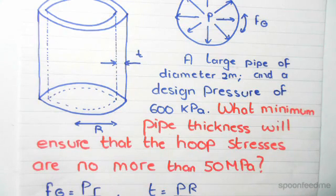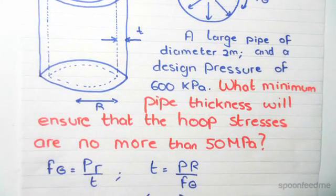So we need to find the thickness that ensures we don't exceed 50 megapascals worth of hoop stresses. As we've seen this equation before, F theta, which is known as hoop stress, equals PR divided by thickness, where P is the pressure, R is the radius, and T is the thickness.